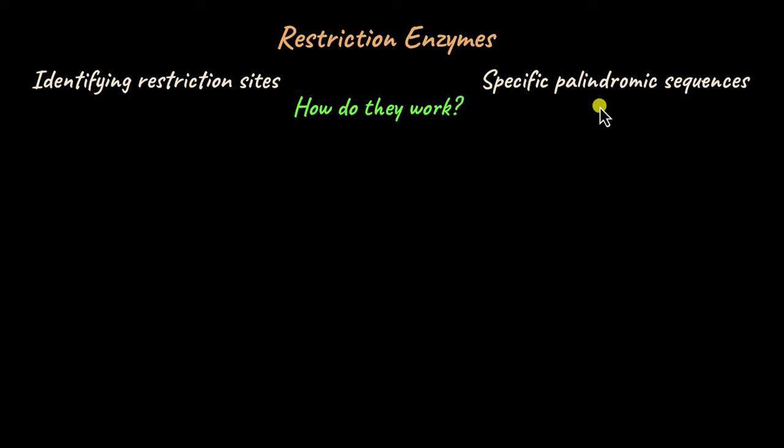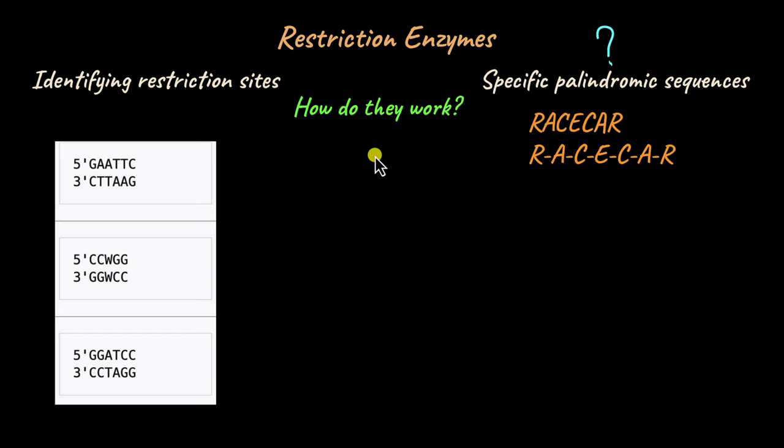You may be familiar with the term palindrome, but if not, a palindrome is a word that is spelled the same both ways, front and back. Race car is an example of a palindrome: R-A-C-E-C-A-R. Like this, restriction enzymes recognize specific restriction sites which are palindromic short 5 to 8 nucleotide long sequences. These are some examples of restriction sites that a few restriction enzymes can recognize, and they make cuts within this restriction site.